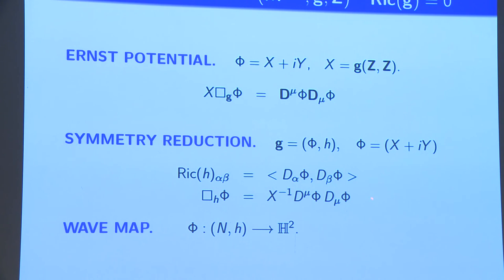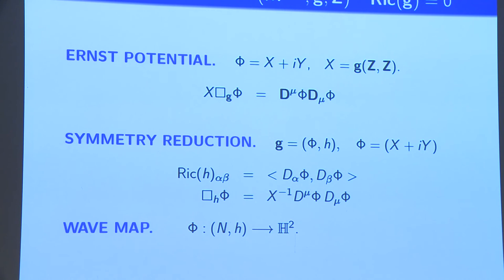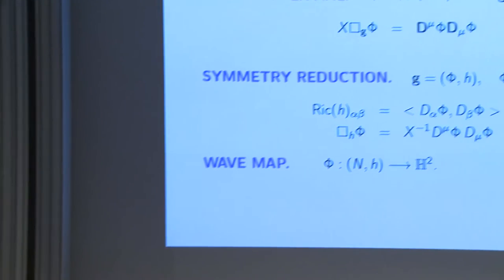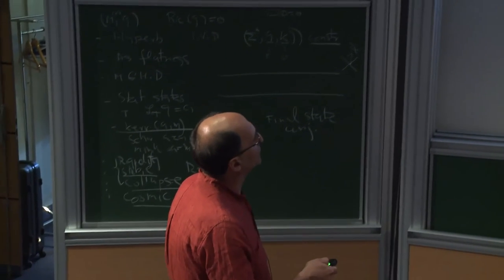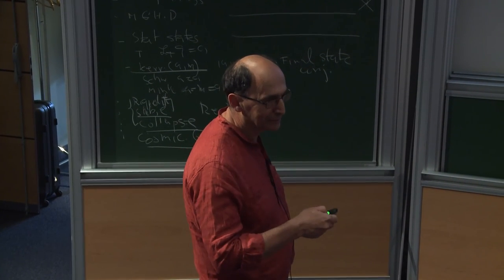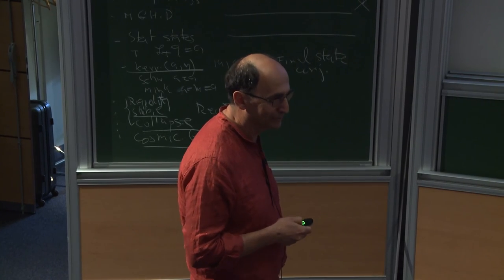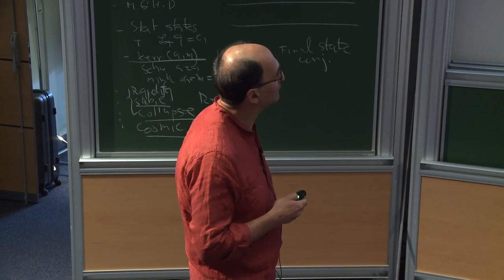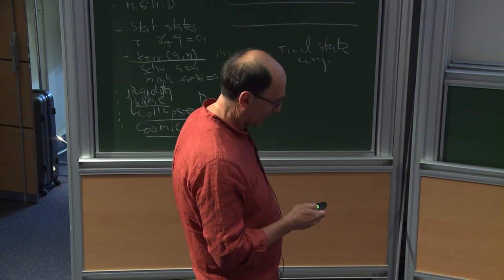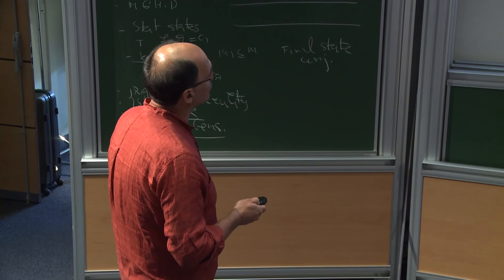The metric decomposes into a 2+1 metric and this complex scalar. You have the wave map equation, but you also have to relate the wave map to the curvature: the Ricci part of this 2+1 metric is tied to the wave map through a specific relation. This would be a great challenge for people who know wave maps — usually done in Minkowski space — to apply their methods to this true wave map, which is coupled to a metric as a quasi-linear system.